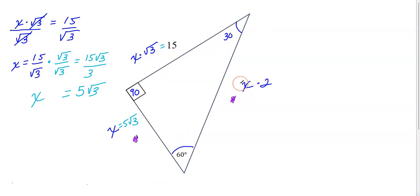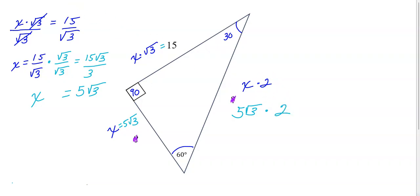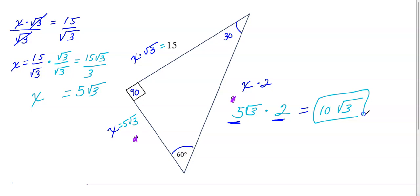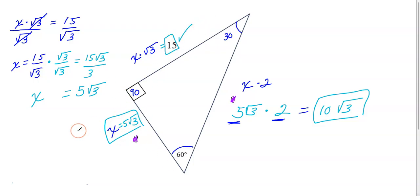The short side is 5 square root 3. Now for the hypotenuse: it's X times 2, and X is 5 square root 3, so that's 5 square root 3 times 2. Multiplying 5 times 2 gives 10, and bringing over square root 3 gives 10 square root 3. So the long leg was given as 15, the short side is 5 square root 3, and the hypotenuse is 10 square root 3.